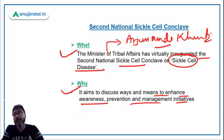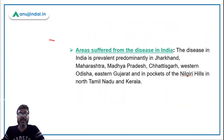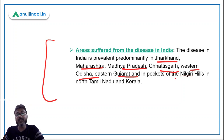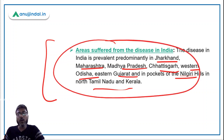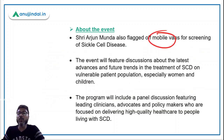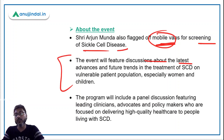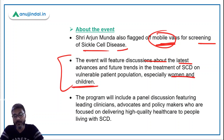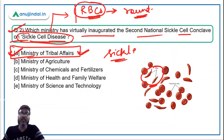The conclave will discuss how to spread awareness about sickle cell disease, how to prevent it, and what management initiatives can be carried out to tackle it. Areas suffering from this disease in India include Jharkhand, Maharashtra, Madhya Pradesh, Chhattisgarh, western Odisha, eastern Gujarat, and pockets of Nilgiri Hills in north Tamil Nadu and Kerala. A mobile van was also flagged off by the Minister of Tribal Affairs for screening of sickle cell disease. The correct answer is the Ministry of Tribal Affairs.